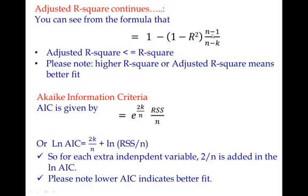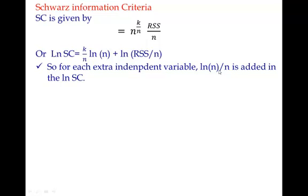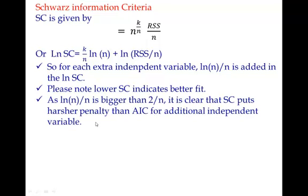Now just understand whatever penalty it was putting for extra addition of variable, it is putting more than that because here straightforward 2 by n you are adding for each independent variable. Now take the Schwarz criteria. Schwarz criteria is given by this, or log Schwarz criteria will be given by this. Now if you see, for each additional variable you are actually adding ln(n) by n. Now keep in mind, ln(n) by n is definitely bigger than 2 by n. So that's how Schwarz criteria puts harsher penalty than AIC for additional independent variables.